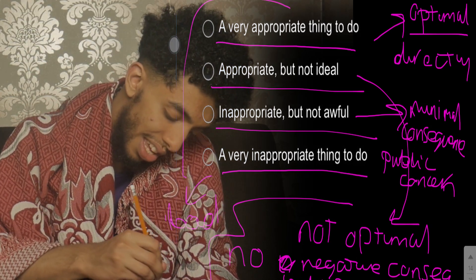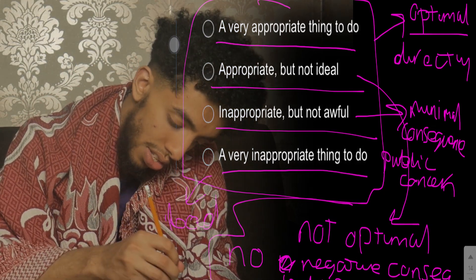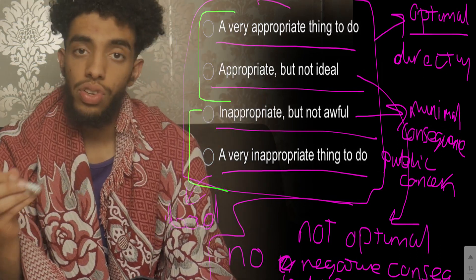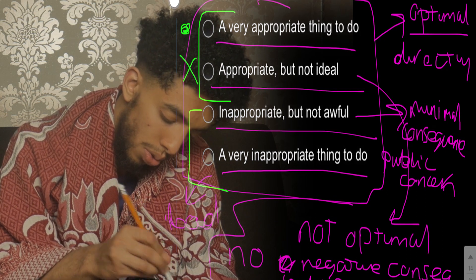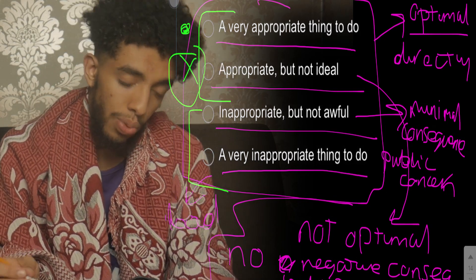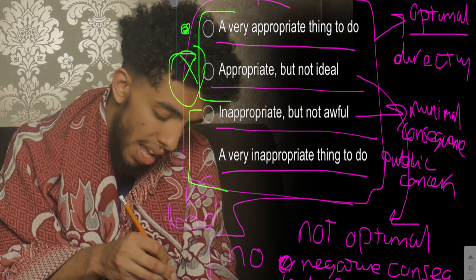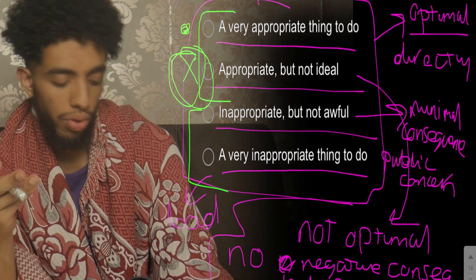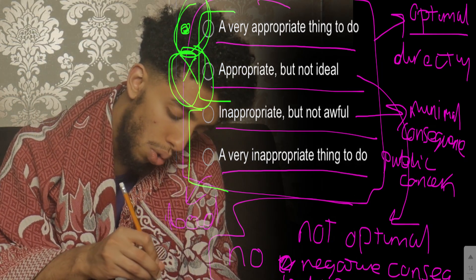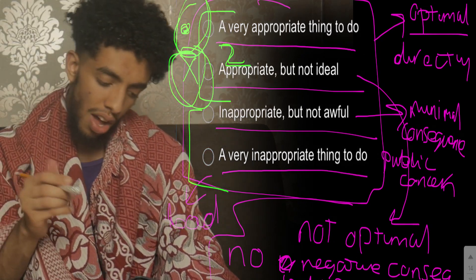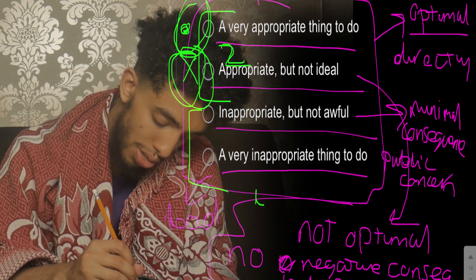These four options work like a tick list. If you choose adjacent answers — for example, if the right answer was 'very appropriate' and you chose 'appropriate but not ideal' — you would still be given partial marks. That's what's good about this section. If you score many answers in that adjacent bracket you'd score band two or band three. Consecutively scoring the correct answer would put you closer to band one. If you mostly score correctly but occasionally pick the second best answer, you'll be placed in band two.